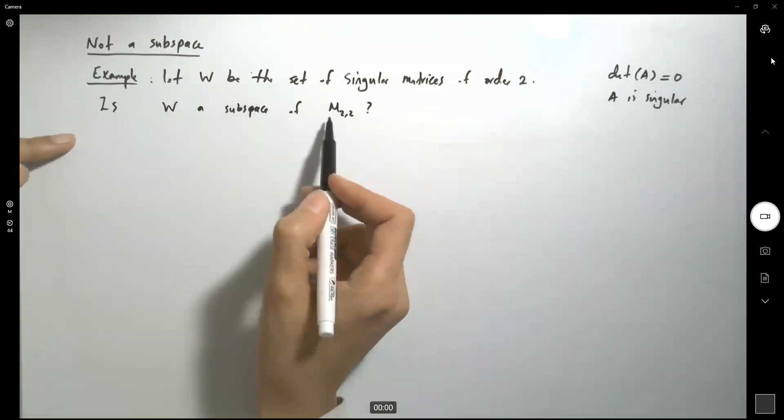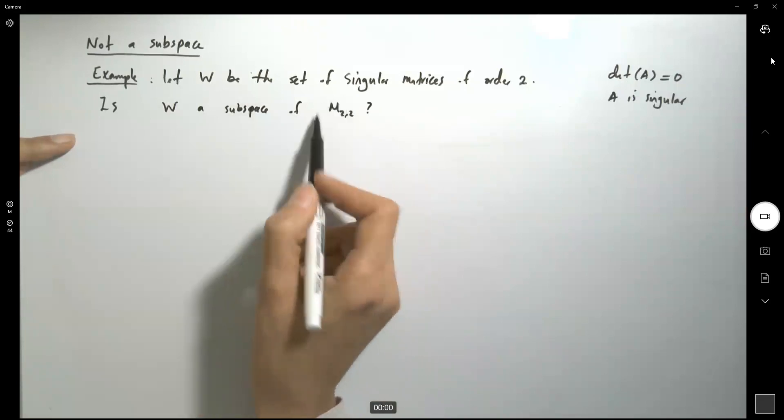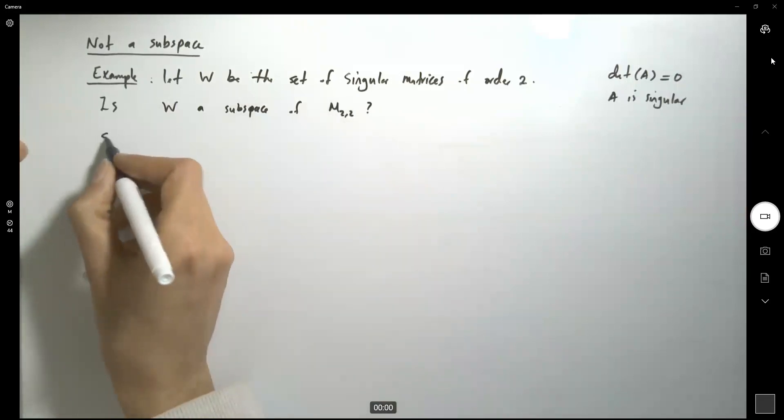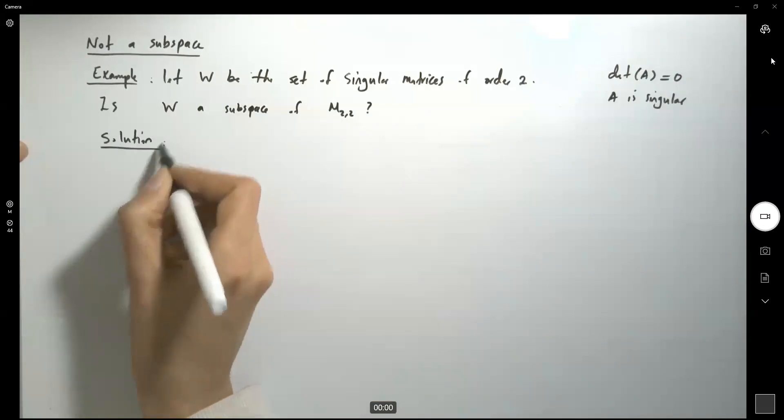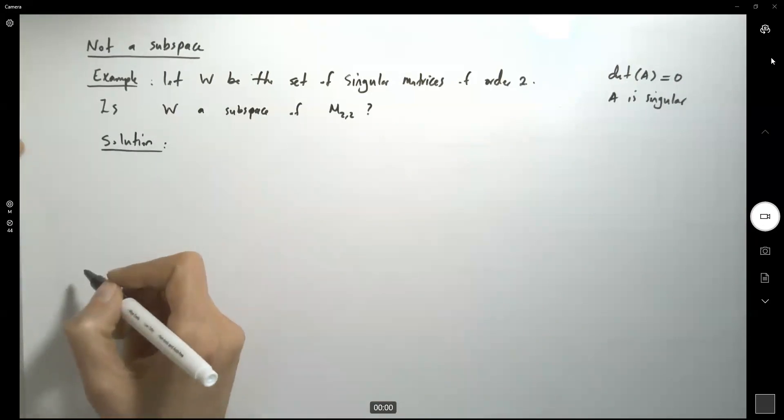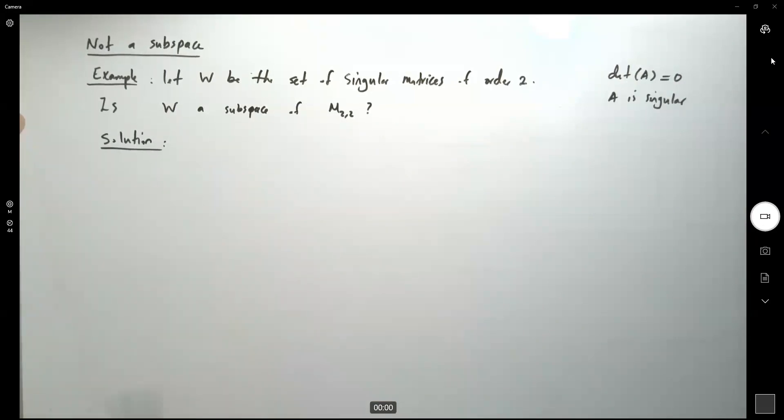So is this a subspace of the space of all 2x2 matrices? Let's show the steps behind this solution.